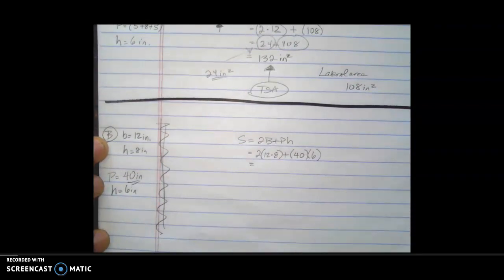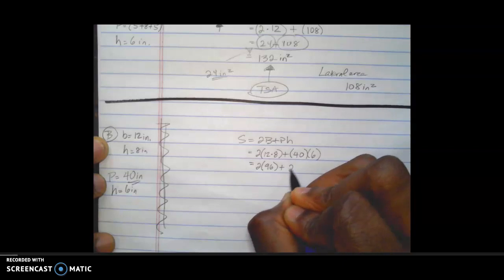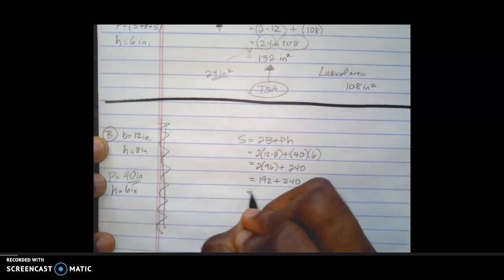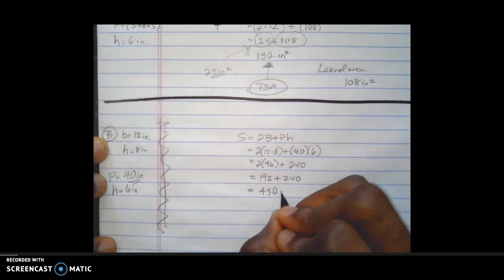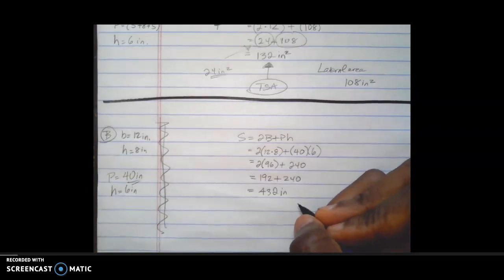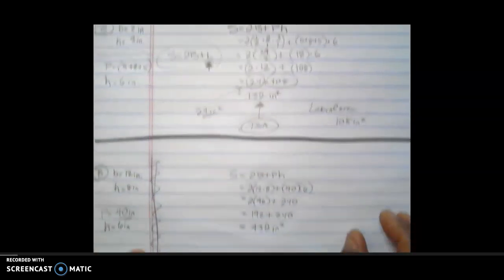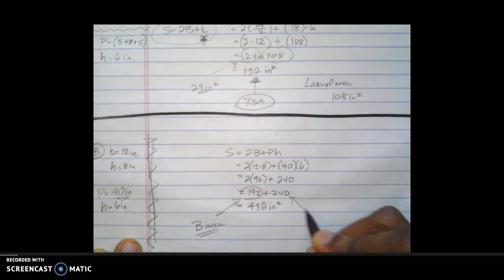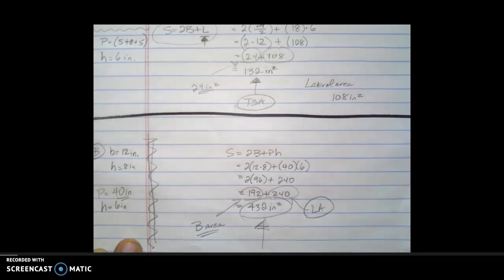Now, what I've done is I've taken the liberty of going ahead and filling this out a bit. We already have everything set up. We know that 2 times 12 times 8, which is 96, plus 40 times 6 is 240. So 96 times 2, that's going to give me 192 plus 240. When I add all of those things up, it is going to give me 432, and I'm going to bring back my unit, which is inches. Being total surface area, it's going to be inches squared.